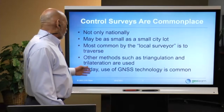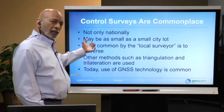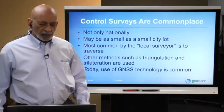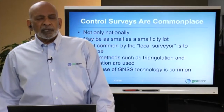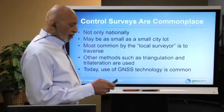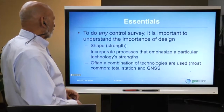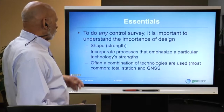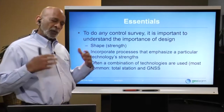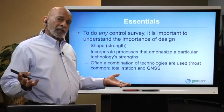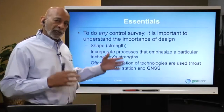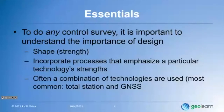Today we might use total stations or GNSS technology. For control work, you should be doing static observations rather than RTK, because RTK has certain issues with verifying good control. It's important to understand the importance of design — you don't randomly place control. You place it for the convenience of future survey work, but you also need to think about what's called 'strength of figure': nice quadrilaterals with diagonals, or nice triangles that are not too skinny.